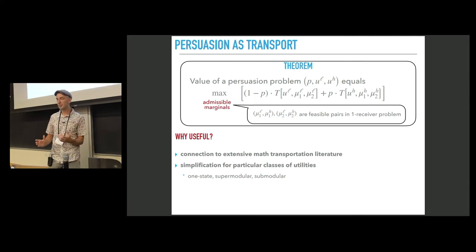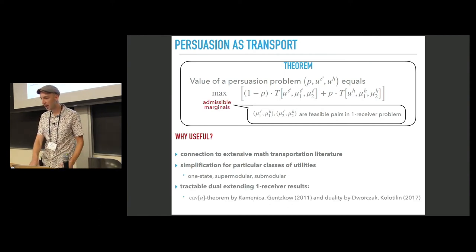What we consider in the paper is the case of one-state persuasion where the utility is non-zero just in one state. And also cases of sub-modular and supermodular utilities. But now I want to talk about another reason why this representation is useful.